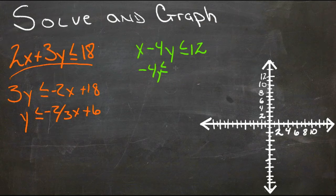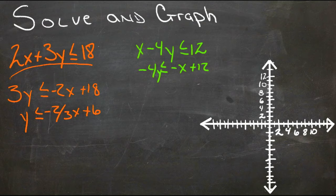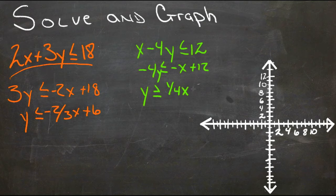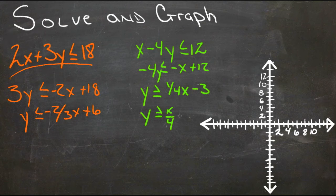For the second inequality, we get -4y ≤ -x + 12. Dividing both sides by negative 4 requires switching the sign, giving us y ≥ (1/4)x - 3, which can also be written as y ≥ x/4 - 3.